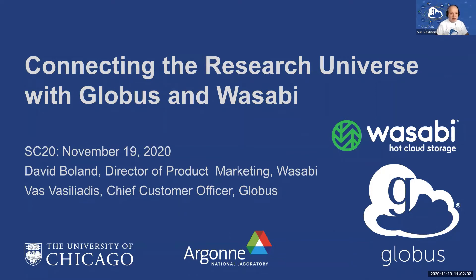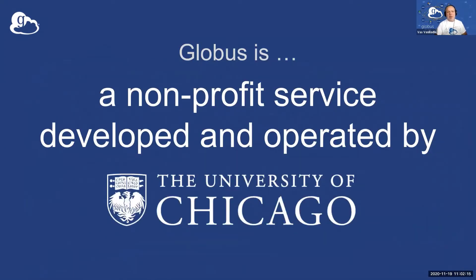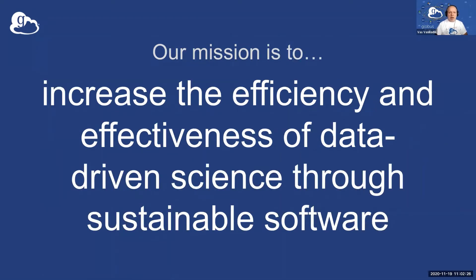Welcome everybody. I'm Vas Vasiliadis with the Globus team. Just fair warning that we may get some unintended noise in the background, but we'll work through that. A couple of words about who Globus is: we're a group at the University of Chicago and we develop and operate this research data management service on behalf of the broader community. Our mission is to make data management and data-driven science much more efficient, and to do so in a sustainable way.